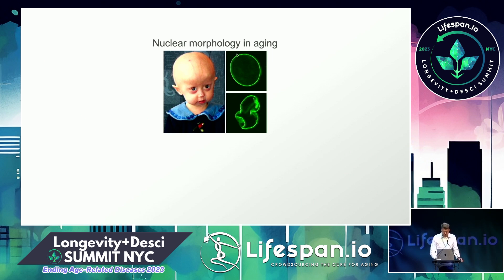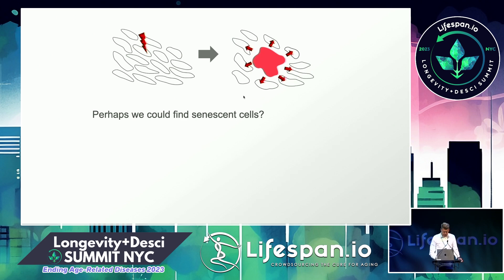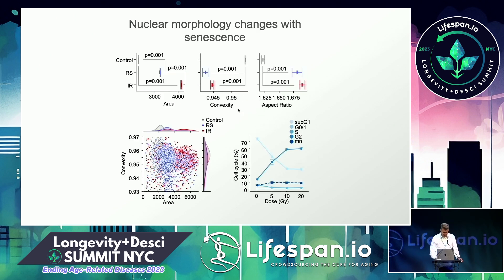We're attempting to salvage this project. One thing we considered was looking at nuclear morphology — we know nuclear morphology changes with age, and it also changes in premature aging conditions like Hutchinson-Gilford progeria, which involves a change in the nuclear envelope. So nuclear morphology is a known correlate of aging.